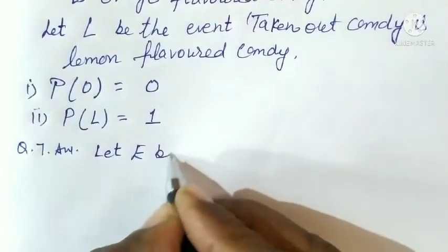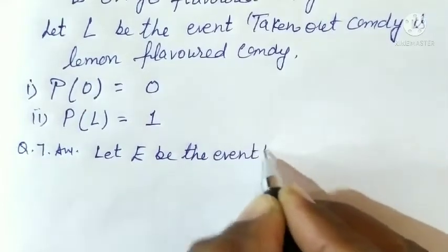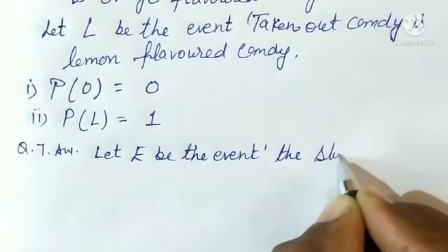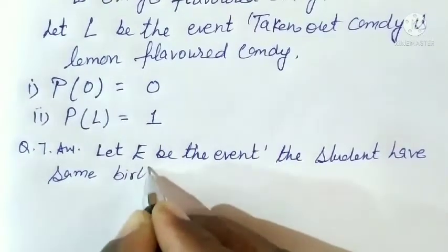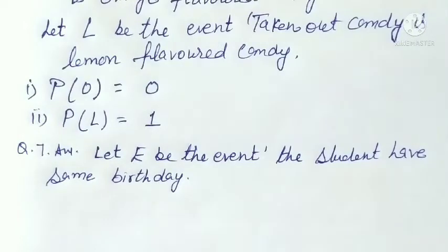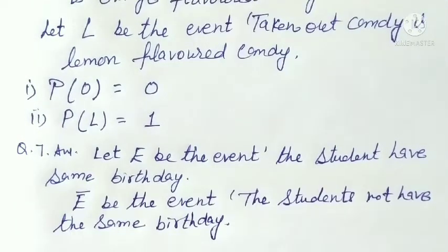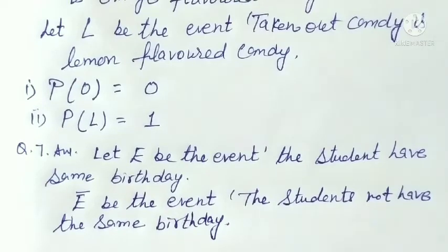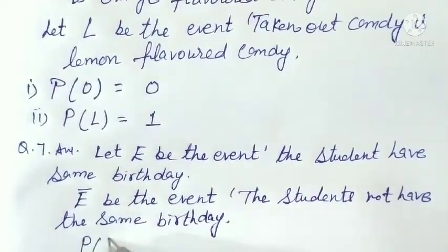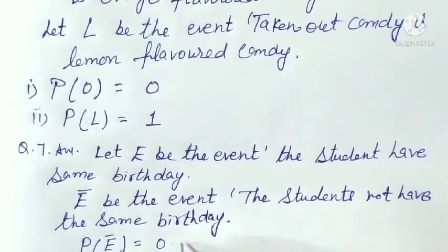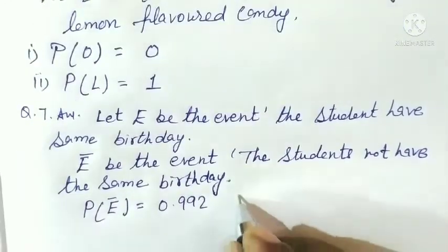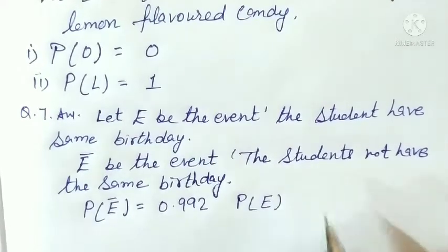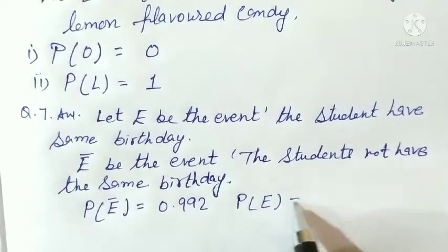Let E be the event that the students have the same birthday۔ ہم نے same birthday ہونے کی event کو E مان لیا۔ Complement of E be the event the students do not have the same birthday۔ ہمیں یہاں پر given ہے کہ P(E complement) = 0.992۔ ہمیں find out کرنا ہے probability of E — یعنی students کے same birthday ہونے کی probability۔